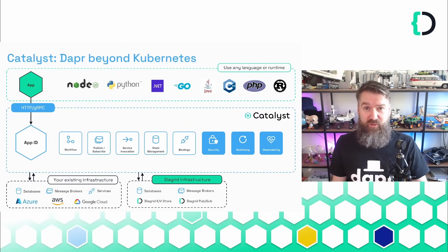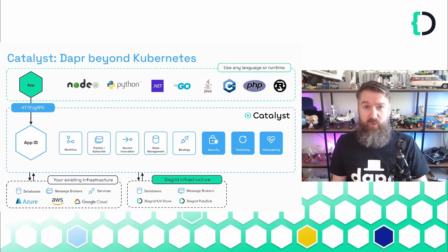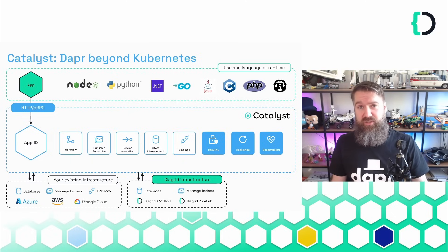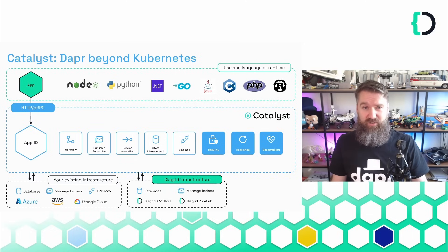If you like the unified APIs and abstractions that Dapr offers but don't want to use Kubernetes, then you should check out Diagrid Catalyst. This is our brand new product, currently in private preview, that is basically Dapr as a service. You're responsible for running your applications anywhere you want — it can be serverless functions, app services, containers, on any cloud or edge — but you're not responsible for running the Dapr sidecar. This is managed by Catalyst.